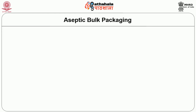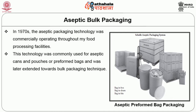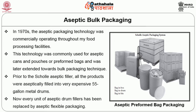Let us now discuss some points about aseptic pulp packaging. In the 1970s, aseptic packaging technology was commercially operating throughout food processing facilities. This technology was commonly used for aseptic cans and pouches or pre-formed bags and was later extended towards bulk packaging techniques. Prior to the Scholle aseptic filler, all products were aseptically filled into very expensive 55-gallon metal drums. Now, every unit of aseptic drum fillers has been replaced by aseptic flexible packaging.